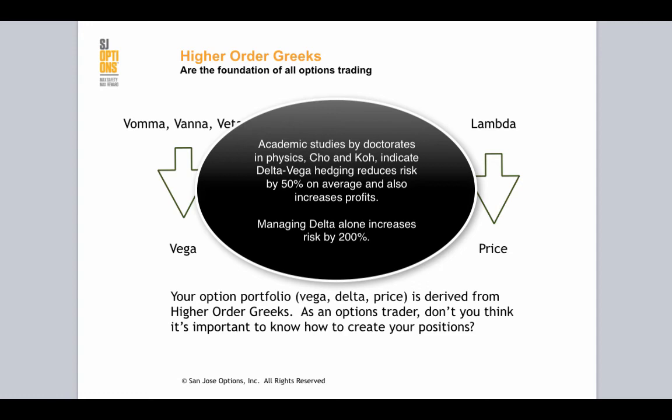Those studies prove that delta-Vega hedging reduces risk by 50%. Delta-Vega hedging is extremely important, and we've been teaching that for five or six years already.